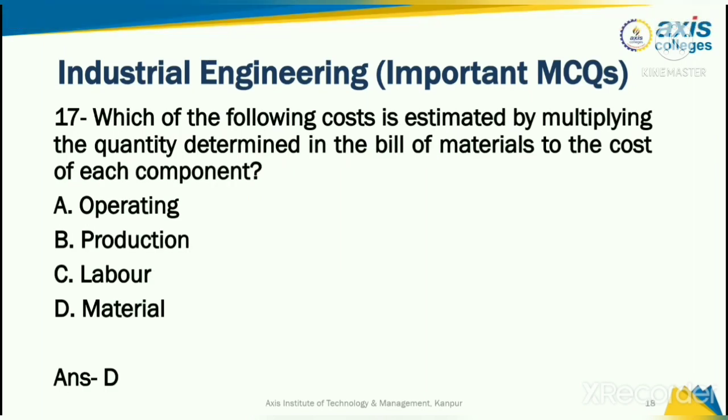Which of the following cost is estimated by multiplying the quantity determined in the bill of materials by the cost of each component? For example, if one component costs two rupees, you calculate one multiplied by two to get the total cost for that component.